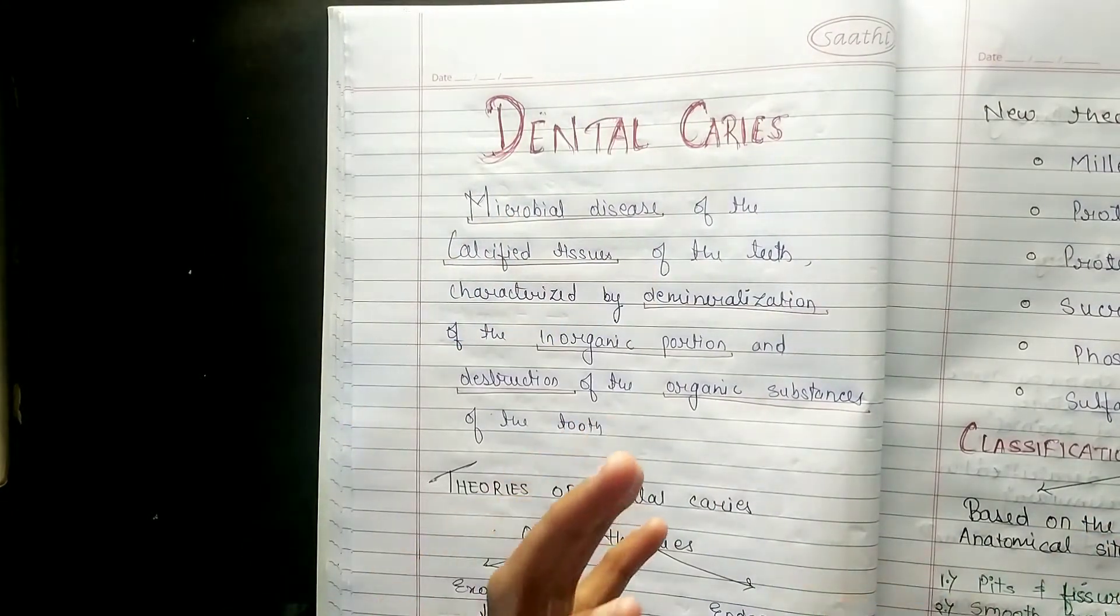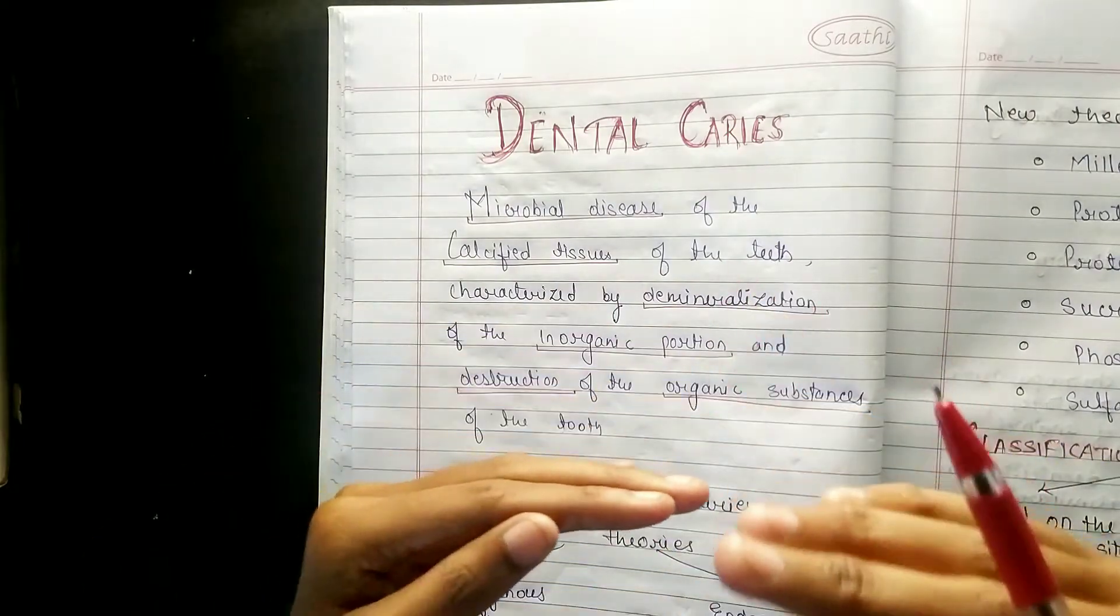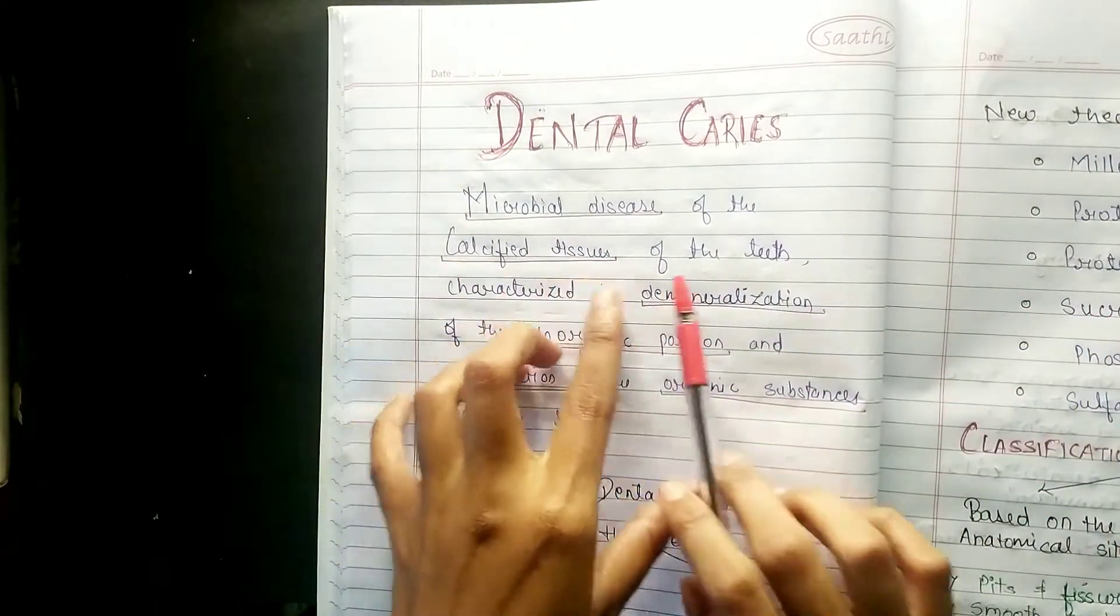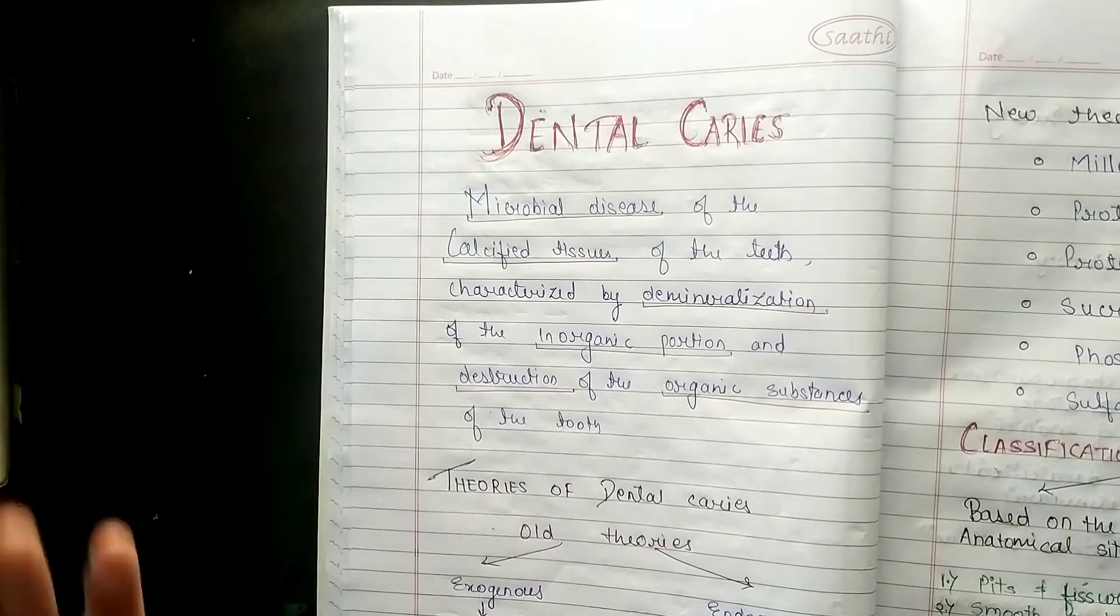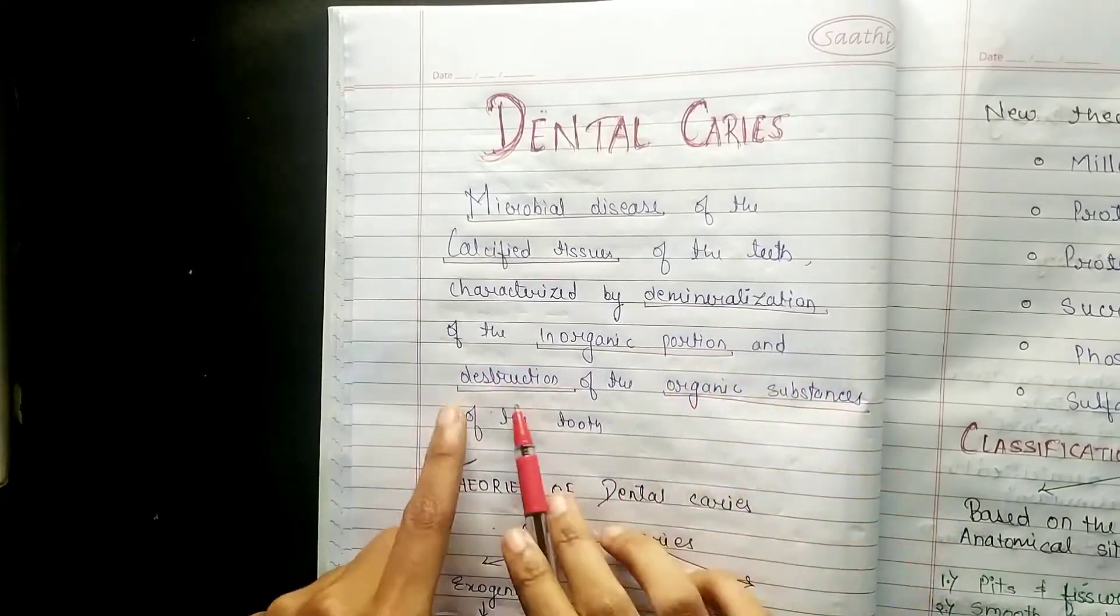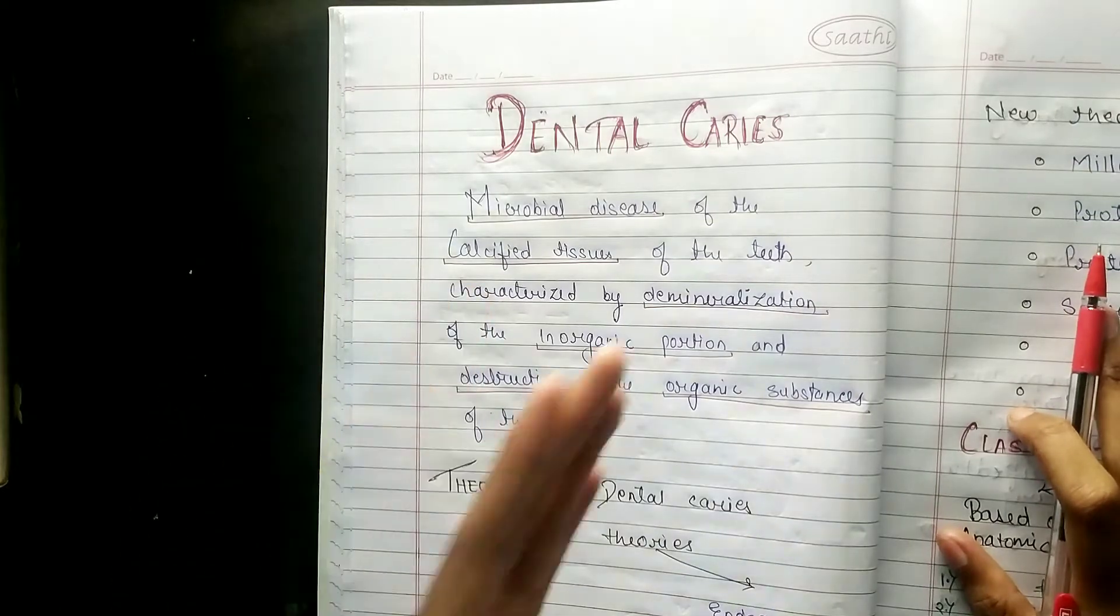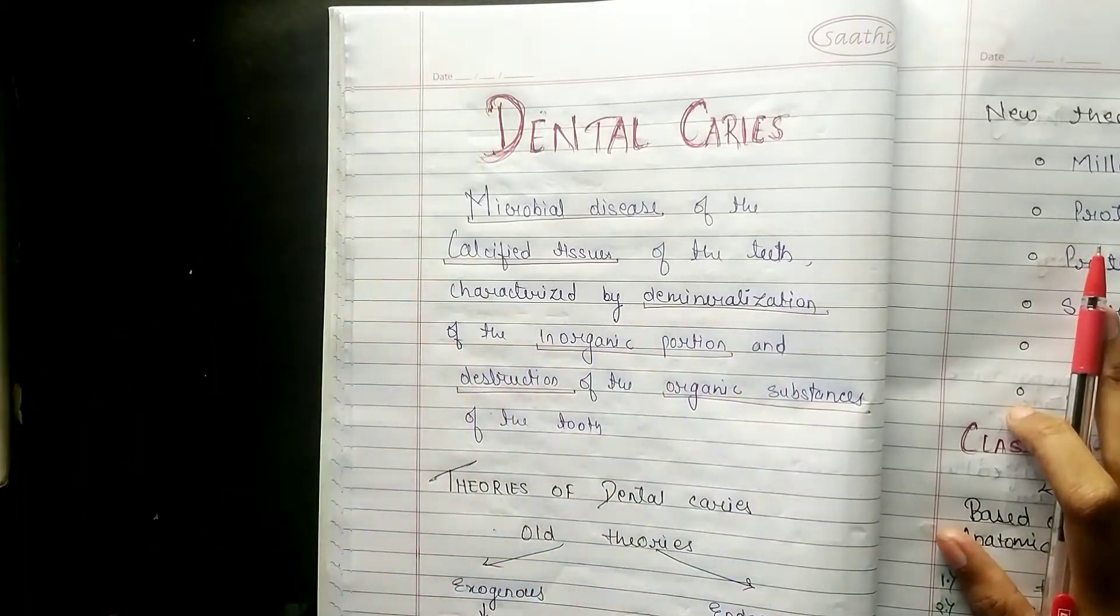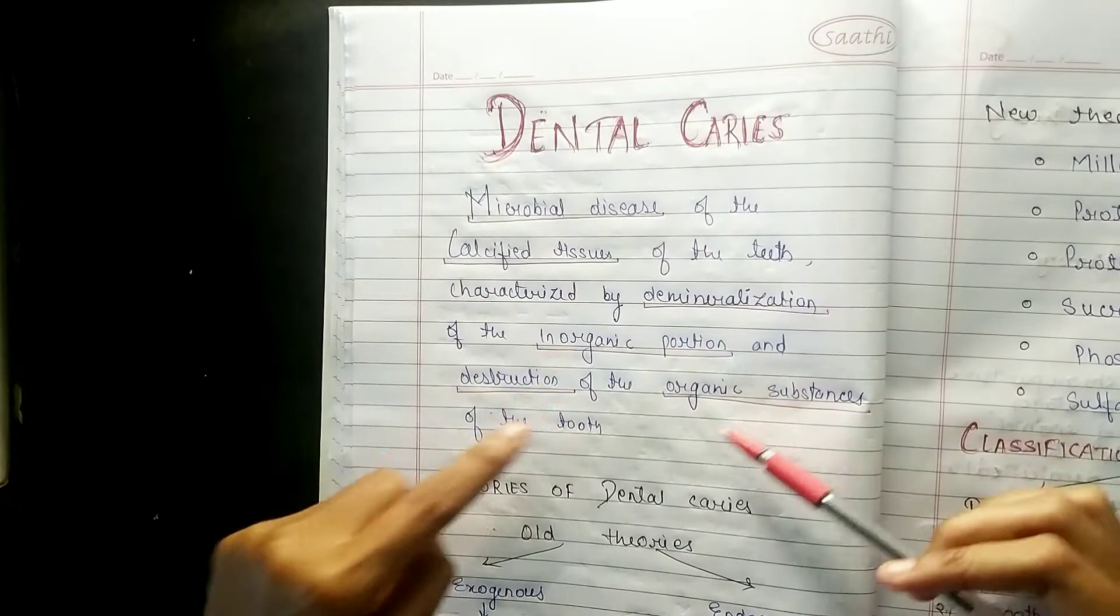What happens if you eat too much sweets? The microorganisms will increase. Microbial disease because of the tooth, the microorganisms will increase. And then what it will do? It will cause demineralization of the inorganic portion and the destruction of organic substances.